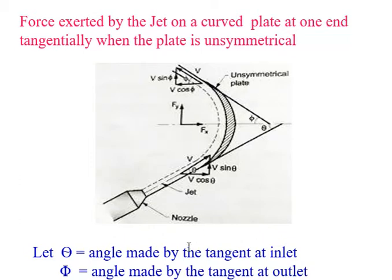Let theta be the angle made by the tangent at the inlet and phi be the angle made by the tangent at the outlet. The velocity at inlet is resolved into two components: V cos theta and V sin theta. Similarly, at the outlet, the velocity V is resolved into two components: V cos phi and V sin phi.